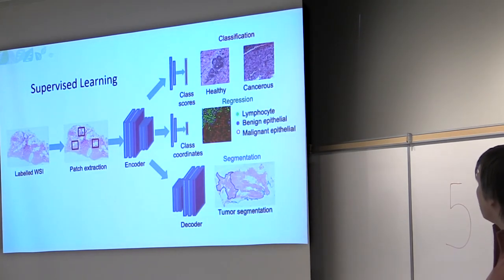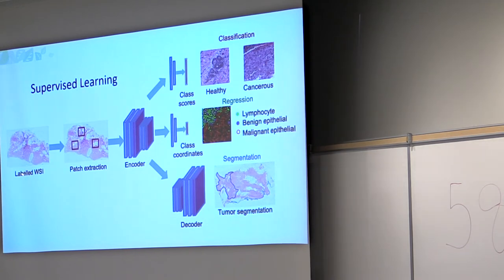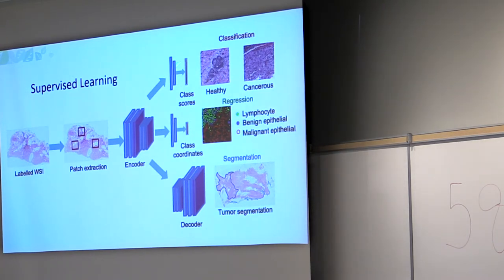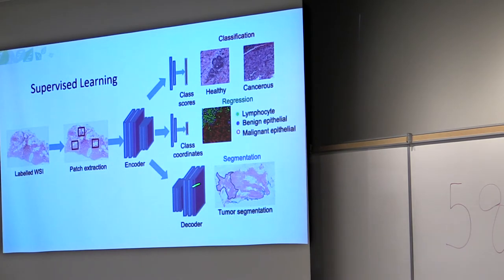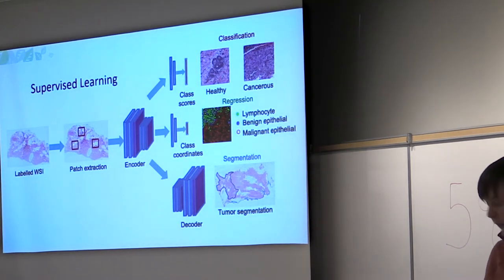I'll start with supervised learning methods. We take labeled whole slide images, extract patches — we can't put the whole image in — and run them through a CNN. You can do classification with binary or multi-class labels, detect cell coordinates, do cell segmentation, or do full segmentation with something like a U-Net, which is very commonly used for this task.